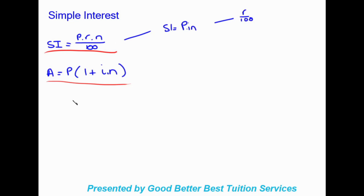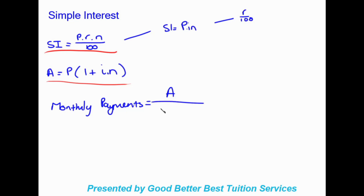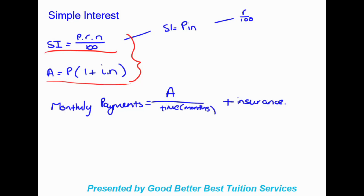If they ask us to work out monthly installments, that would be: monthly payments = A (future value) ÷ time in months, plus any insurance they provide. These are just different types of questions they could ask. The two main equations to focus on are working out the amount of interest and working out the future value straight away.